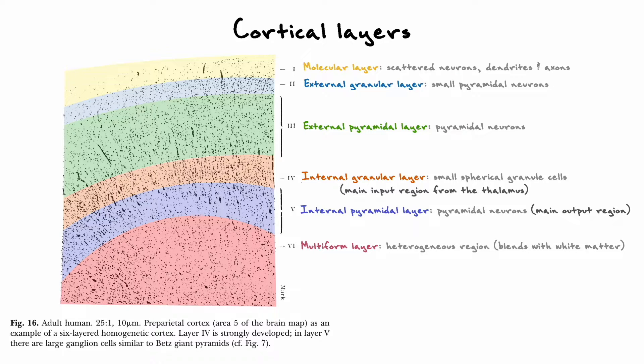Finally, the last layer of the neocortex is called the multiform layer, and it is characterized by having a heterogeneous profile of neurons. Due to its proximity with white matter, this layer ends up blending with the incoming or outgoing axons.